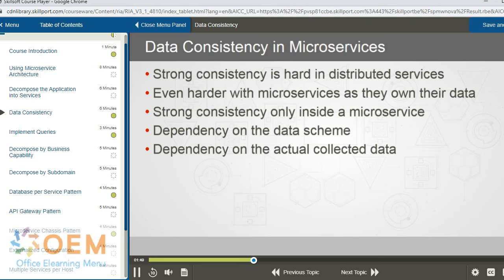And this is the reason why we have terms like eventual consistency or not 100% consistent. With microservices, it becomes more difficult because each and every microservice will have their own data.